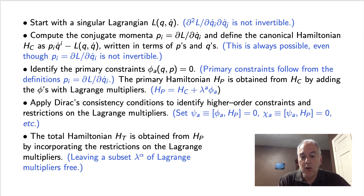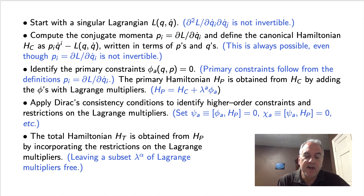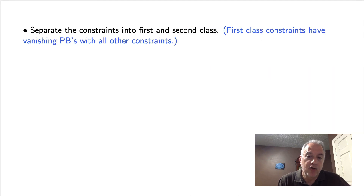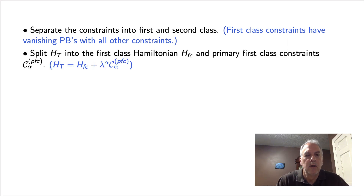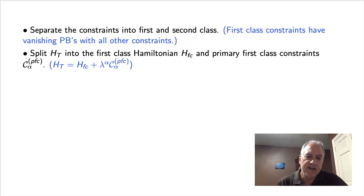The next step is to define the total Hamiltonian, which is obtained from the primary Hamiltonian by incorporating the restrictions on Lagrange multipliers. This leaves some subset of the Lagrange multipliers free. Next, we separate the constraints into first and second class. First class constraints have vanishing Poisson brackets with all other constraints. Second class constraints have nonzero Poisson brackets with at least some of the other constraints. We then split the total Hamiltonian into the first class Hamiltonian — which has vanishing Poisson brackets with all of the constraints — and primary first class constraints. It can be shown that this splitting always occurs.